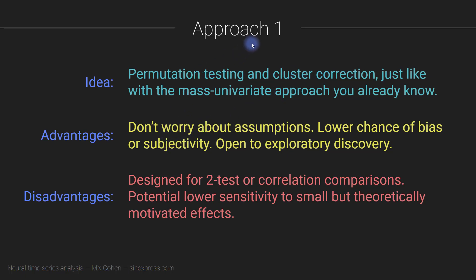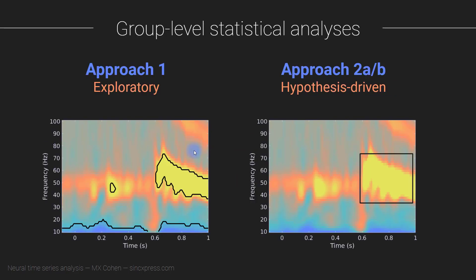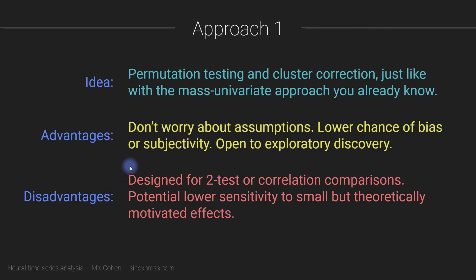The advantages of Approach 1 are that you don't have to worry about assumptions underlying parametric statistics. There is a reduced chance of bias or subjectivity, because you don't have to select the time-frequency windows. You are testing every single pixel in the time-frequency map, and you apply an appropriate statistical threshold, and whatever happens to be significant is what is significant. So you're not selecting any windows of the time-frequency plane a priori, meaning there's less chance of bias, subjectivity, or circular inference.